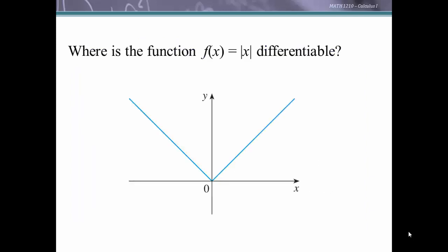Let's look at the absolute value function and determine where it's differentiable. Differentiable means the derivative exists, so let's place point P at x equals 0 and look at a point Q1. The slope of the secant line joining these points is m equals 1. The derivative is the limit as h approaches 0 of the difference quotient, which is the slope of the secant line. As h becomes smaller and smaller, approaching from the right-hand side, the limit of these slopes of secant lines equals 1.